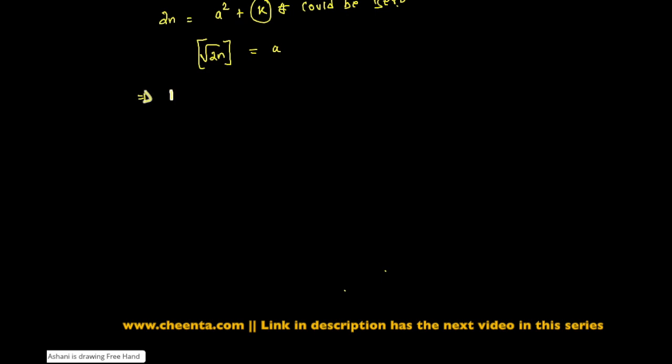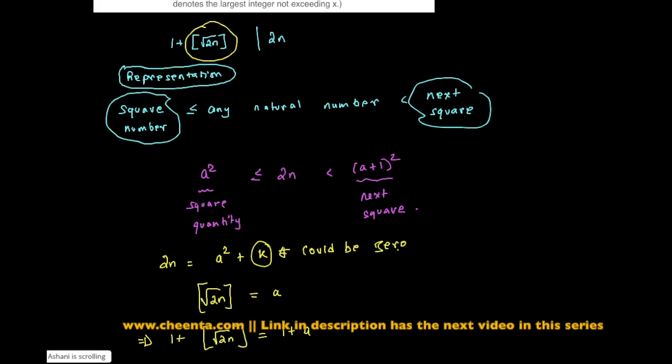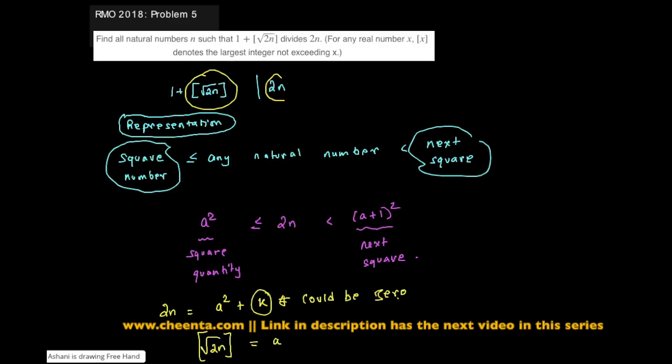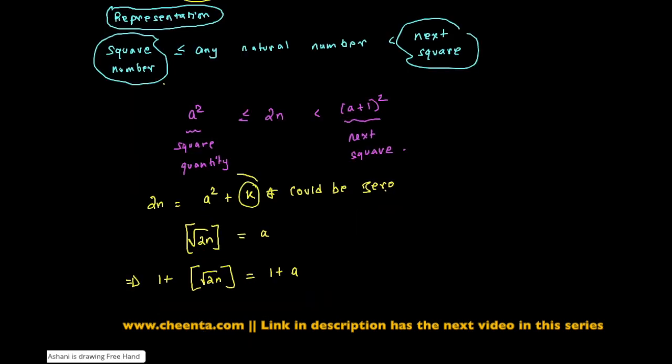And now we can compute 1 plus floor of this, which is 1 plus a. And we want that to divide, we want that to divide 2n. So we assume that 2n is a square plus some quantity.